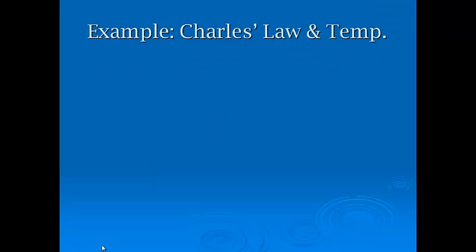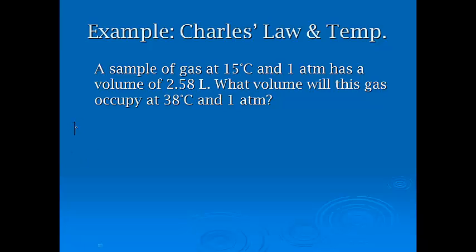All right, let's do one math problem related to Charles' Law. So it's a sample of gas, and as I read it, I'm going to list out the known. So a sample of gas at 15 degrees Celsius. So temperature 1 is 15 degrees Celsius. We're just going to go ahead and add 273 to that because we want it in Kelvin. So that's going to be 288 Kelvin, and my volume 1 is 2.58 liters. We want to know V2. Will this gas occupy at temperature 2 is 38 degrees Celsius? Notice it did give you the pressure, but the pressure is exactly the same. 1 ATM and 1 ATM means it's not going to change, so we don't have to include it in the equation.